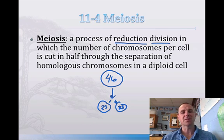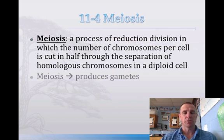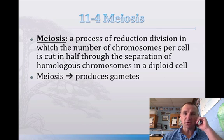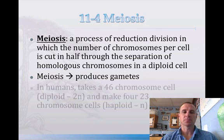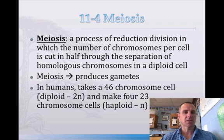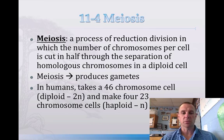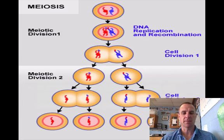So this is the process of meiosis. Basically what you need to know for our test is that meiosis produces gametes — and remember, gametes are sex cells. In humans, we have 46 chromosomes, and meiosis is going to end up making 4 cells, each with 23 chromosomes. That might be a little confusing, but hopefully in a few minutes you'll understand.